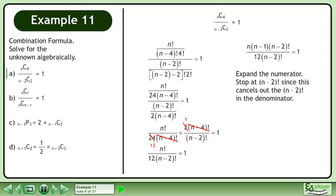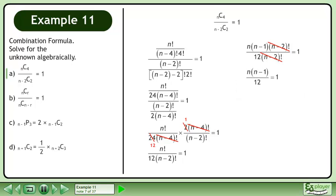Expand the numerator. Stop at n minus 2 factorial since it cancels out the n minus 2 factorial in the denominator. Cancel.